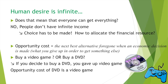Opportunity cost is the next best alternative forgone when an economic decision is made. Basically, it's what you give up in order to get something else. For example, say you got money from your parents and go to a shopping center. You see a video game and a DVD but only have ten dollars, so you can only buy one. If you decide to buy the DVD, then the opportunity cost of the DVD is the video game, because you gave up the video game to buy the DVD.